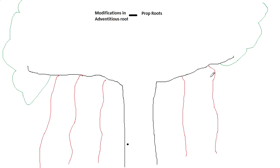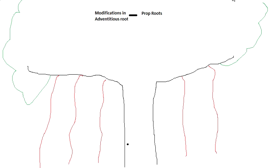What are the functions of these structures? They prevent the branch from breaking down. The huge load of the banyan tree falls on the long branch, and there is a tendency for the branch to break due to this heavy weight. But due to the presence of these pillar-like structures, the branch is prevented from breaking. This is observed in the banyan tree — Ficus bengalensis is the scientific name.